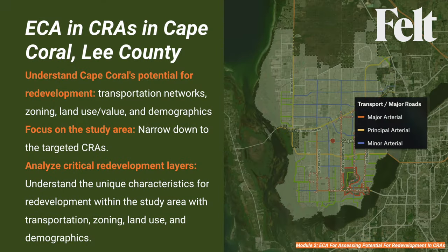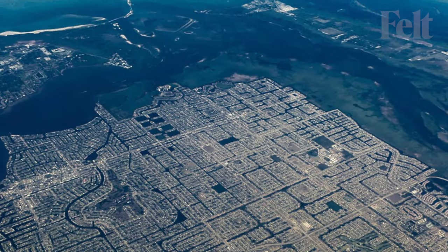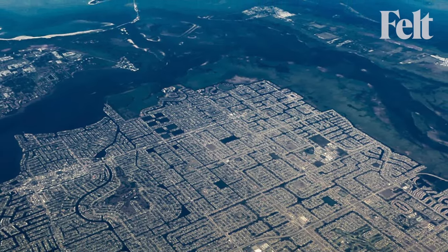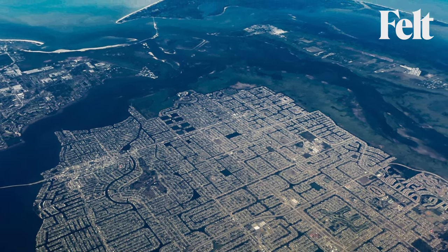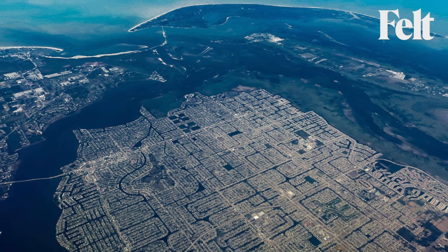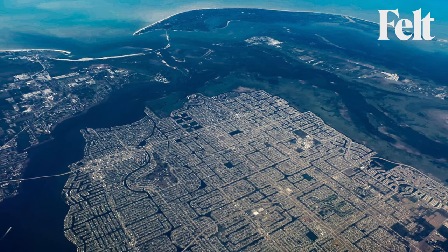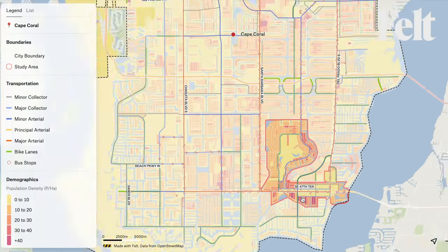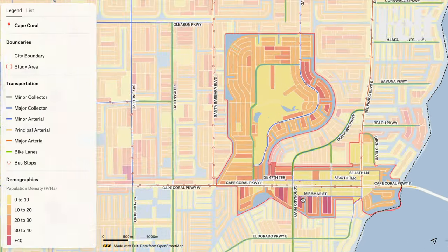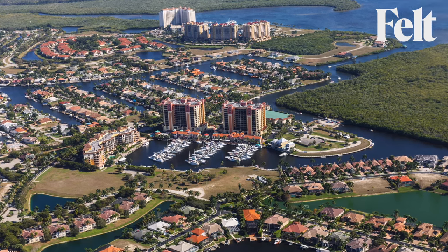Our journey begins by understanding Cape Coral at a high level. We will unravel different layers, exploring transportation networks, zoning regulations, land value and use, and demographics. This holistic approach allows us to establish a comprehensive understanding of the landscape and identify key factors influencing the potential for development. With a high-level understanding of Cape Coral, we narrow our focus to the specific study area — a targeted zone aligned with the extent of the community redevelopment areas.